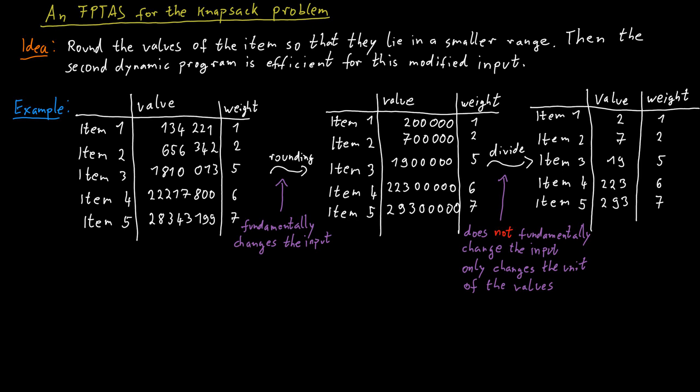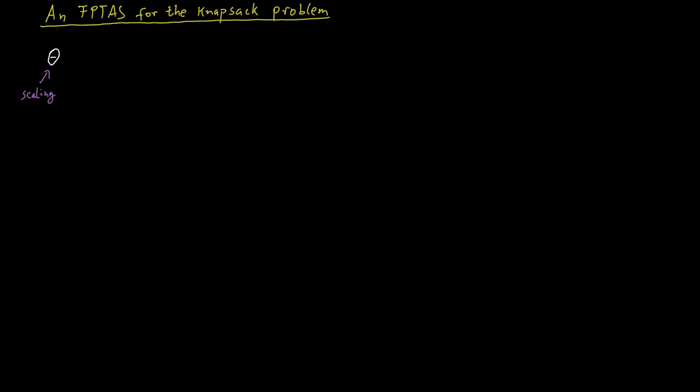Remember that an FPTAS has some epsilon in it, which is a precision parameter that indicates how precise, how good of an approximation we want to have. And based on this precision parameter and the largest value that we see in our original input instance, we choose our scaling factor. Let's call our scaling factor theta. And we choose it to be epsilon times the maximum value that an item has divided by the number of items. Maybe this looks like magic at the moment, but it turns out if you go through the calculations, that's exactly the right amount.